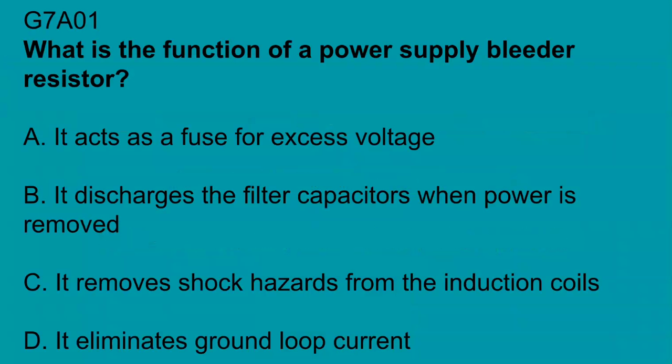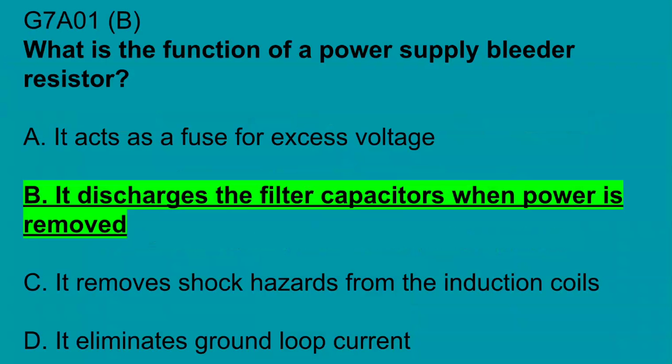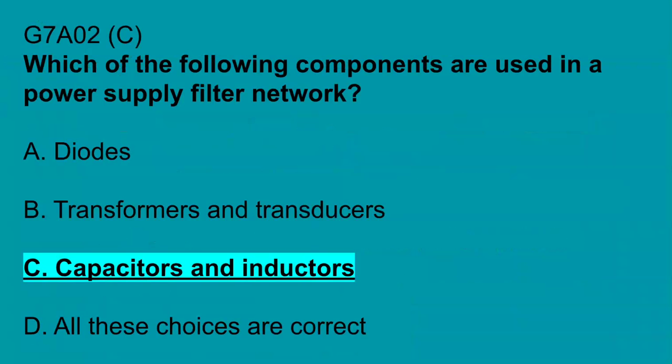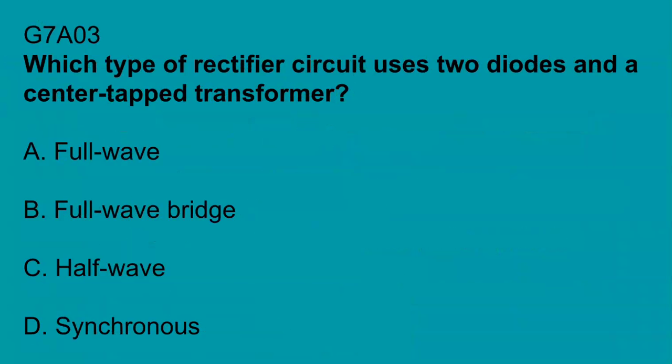G7A01, what is the function of a power supply bleeder resistor? It discharges the filter capacitors when the power is removed. G7A02, which of the following components are used in a power supply filter network? Capacitors and inductors. G7A03, which type of rectifier circuit uses two diodes and a center tapped transformer? Full wave.